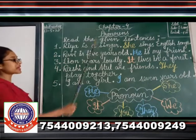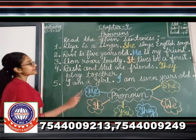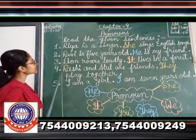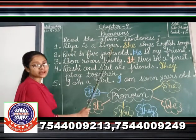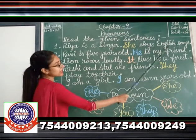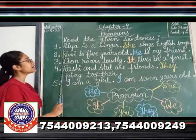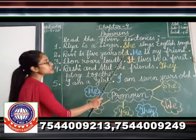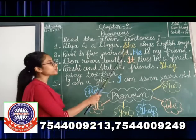Children, some sentences we have read here. Here you have seen one thing — that in place of the nouns, see, these are the nouns. In the first sentence, Rhea is a singer. And what have we written here? She sings English songs. It means, in place of the noun Rhea, we have used 'she'.